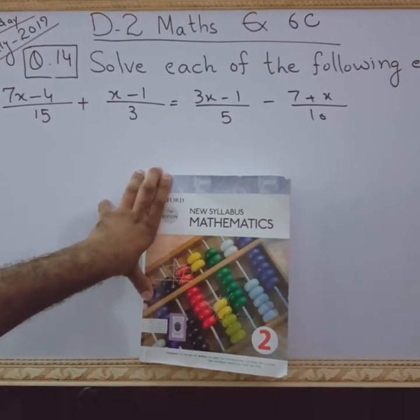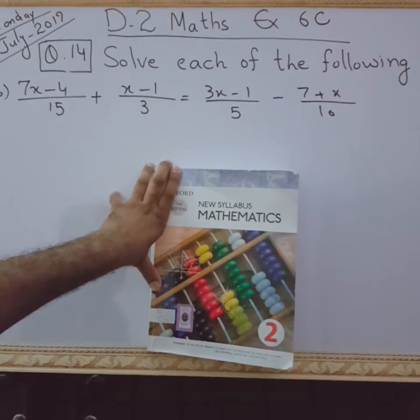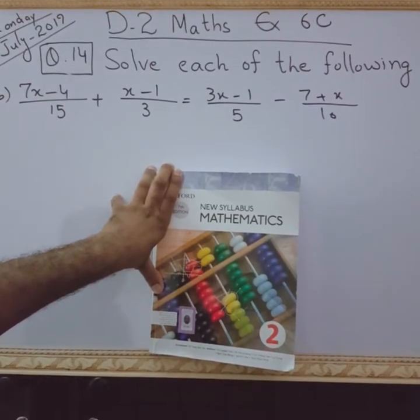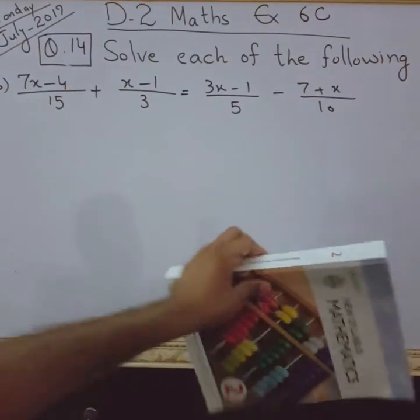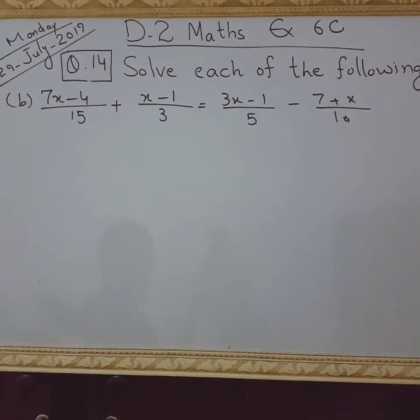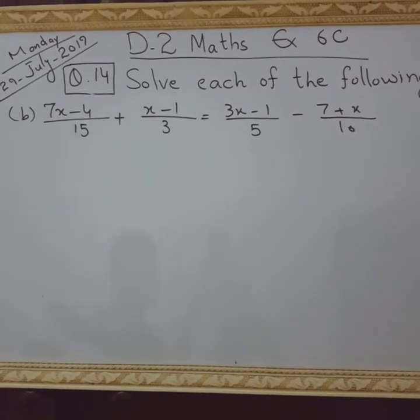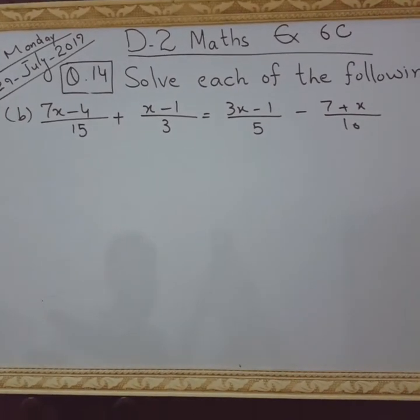Today we are doing exercise 6C and our question today is question number 14. Solve each of the following equations means we have to find out the value of the variable. The value x is used as a variable in this question. So let's read the question first of all. It's B part of question number 14.